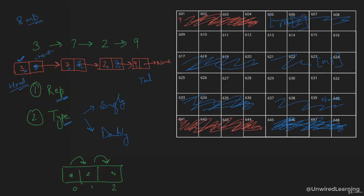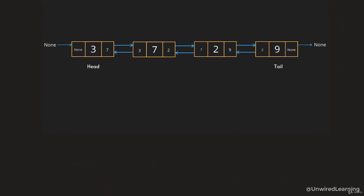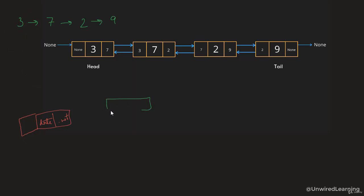In a doubly linked list, we also store information about the previous node. So if the singly linked list node had data and next, the doubly linked list node also stores the previous node reference. This means we can go to both the next and the previous node.